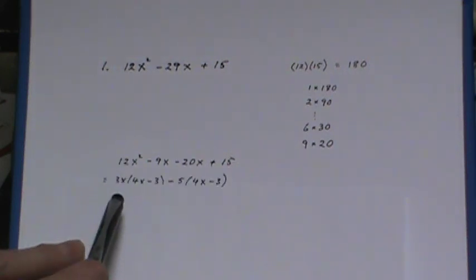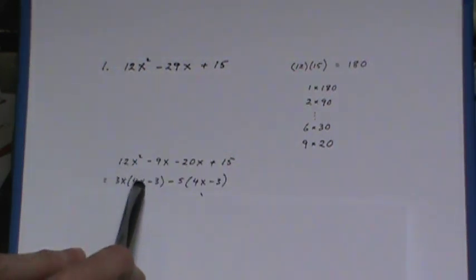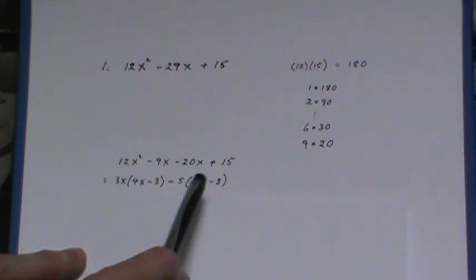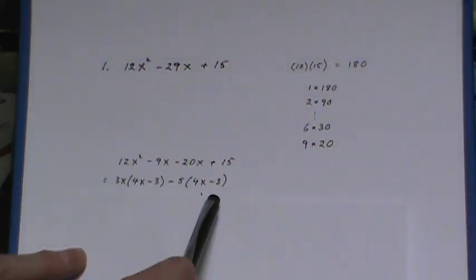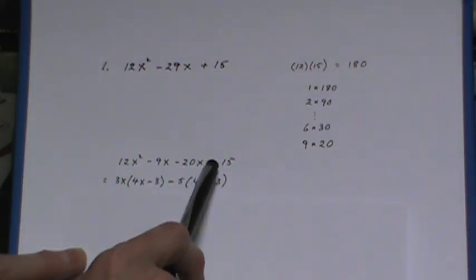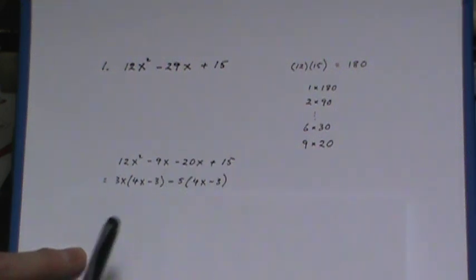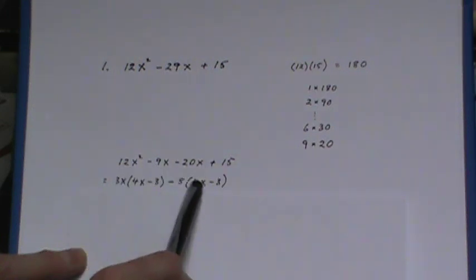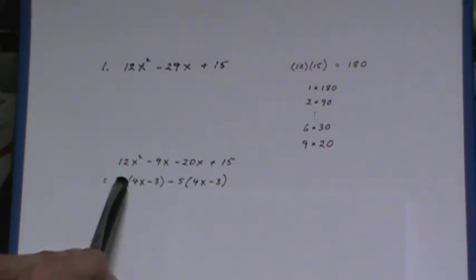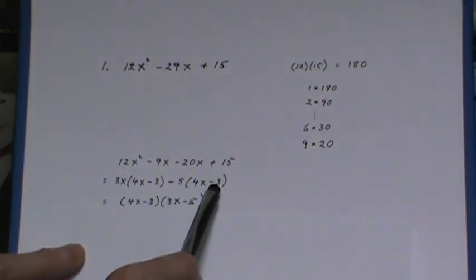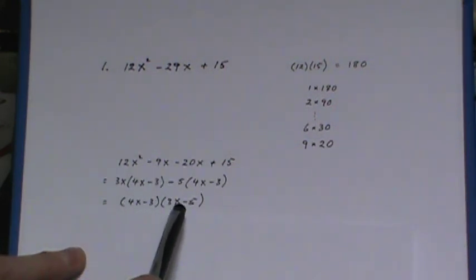And then of course we do the common factor, take out a common factor from the first two, take out a common factor from the second two. Notice the sign change here because when you take the negative out that will change. Decomposition is good because if you make an error here you're going to know because these two brackets have to be identical in order to take out that final common factor.